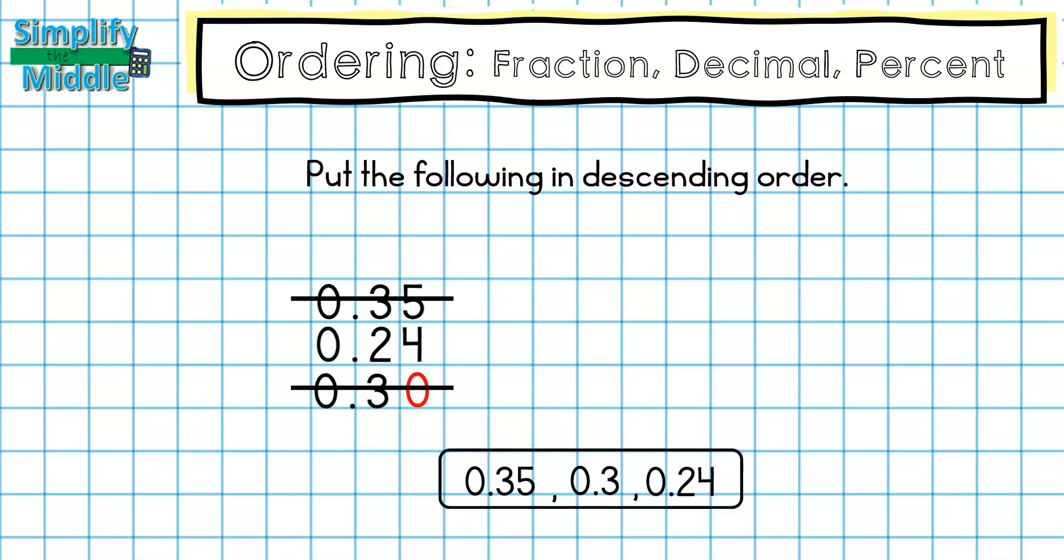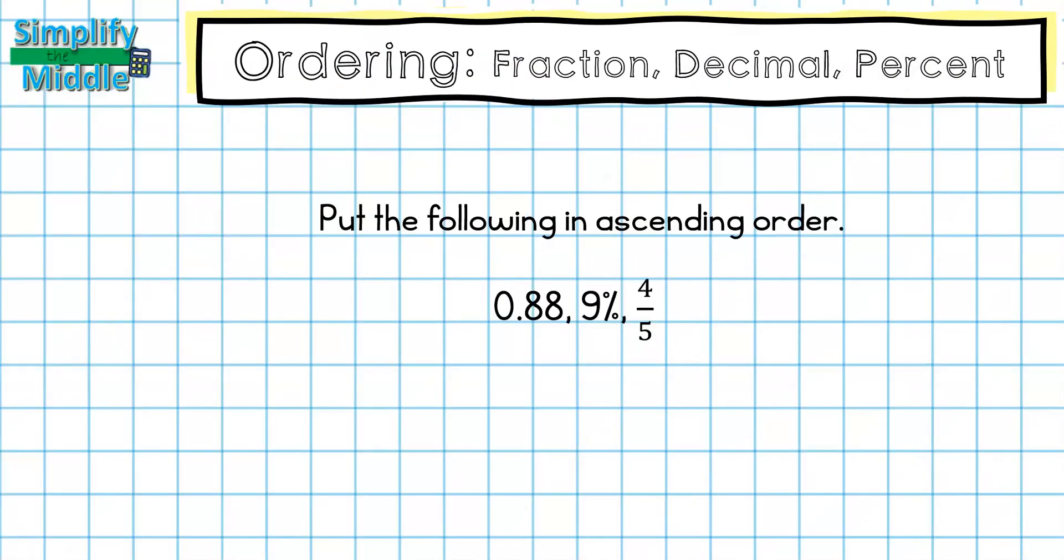Now let's apply this to fractions, decimals, and percents. We want to put the following in ascending order, which means we're going up. So we're going to look for our smallest number. Before we can do that, we need to convert all of these to the same form. So I'm going to use decimal form. My 88 hundredths wouldn't change because it's already a decimal. I would change my nine percent by converting and I would move my decimal place two places to the left. That gives me nine hundredths. Finally, for my fraction, I would divide using long division and I end up with eight tenths.